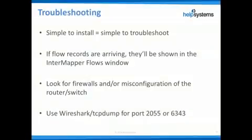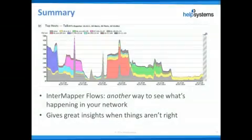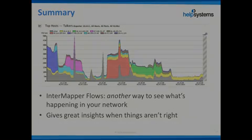InterMapper Flows always shows the flows that are arriving, so if you don't see any, it's because InterMapper Flows isn't receiving the data. A few things to check: wrong configuration of exporters, a physical firewall blocking those flow records, or a software firewall on the InterMapper server. These are the things to troubleshoot when InterMapper Flows isn't working. InterMapper Flows is built right into InterMapper and is very tightly integrated, making it a great value that gives you real insights into your network when things aren't working right.